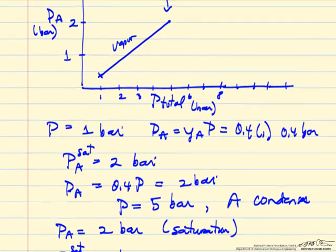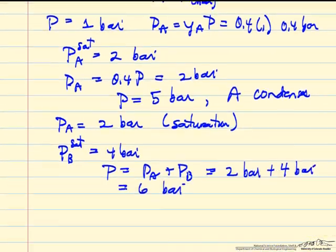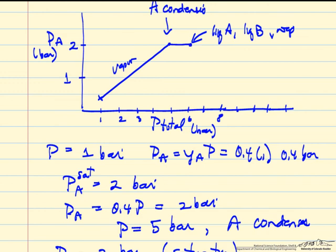So we reach a total pressure of 6 bar. At this point we have liquid A, liquid B, and vapor. The partial pressure of A doesn't change. But if we try to increase the pressure further by pushing down on the piston, the pressure of A can't exceed 2 bar and the pressure of B can't exceed 4 bar at equilibrium. So all the vapor phase disappears, and the partial pressure of A in the vapor phase drops to zero. Above 6 bar we only have a liquid phase.